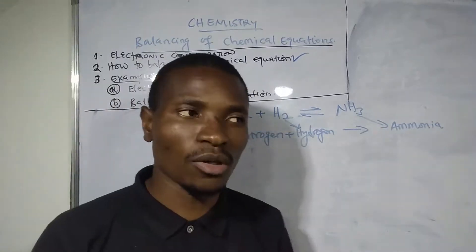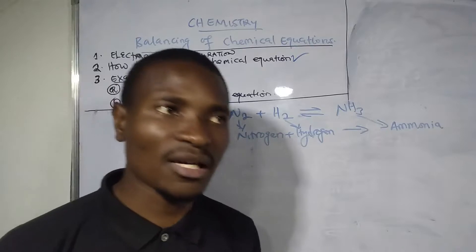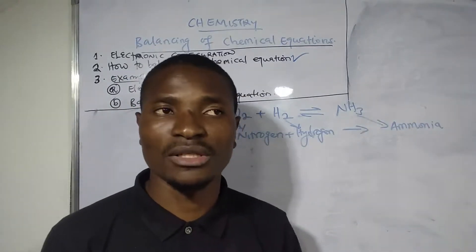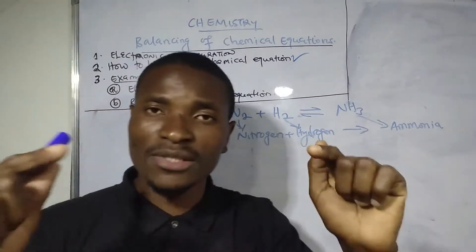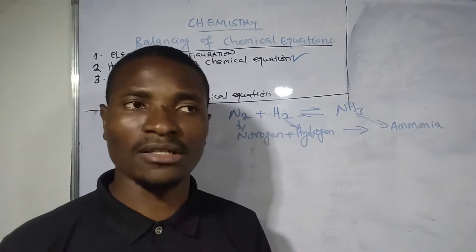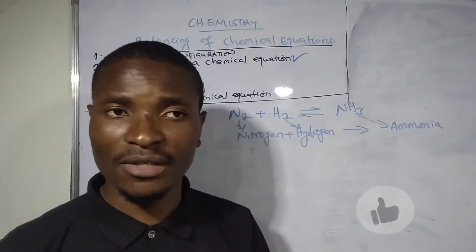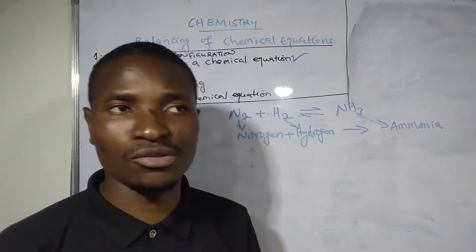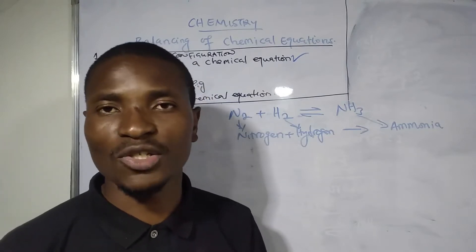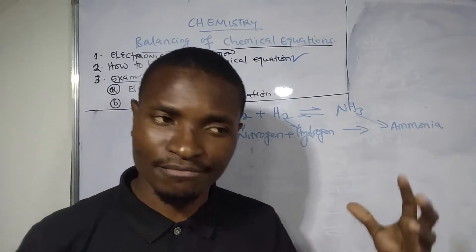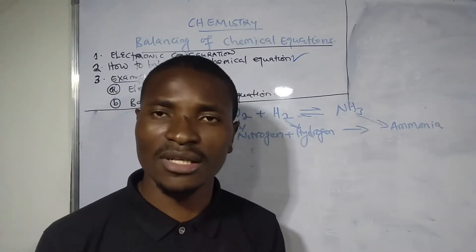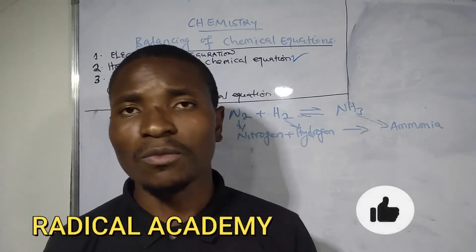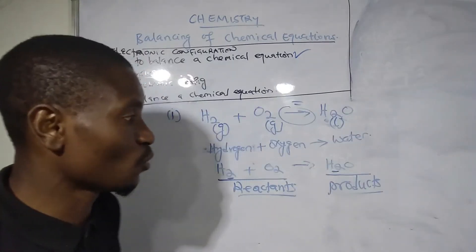I want you to include all the state symbols - whether nitrogen is a gas, solid, or liquid; whether hydrogen is a gas, solid, or liquid; whether ammonia is a gas or aqueous solution. Then balance the chemical equation and post your answers in the comment section so we can see how you're doing. If there's any part you don't understand, I'll redo the video. That will help you build the fundamentals of chemistry. That's it. Bye-bye, and I'll see you in the next video.